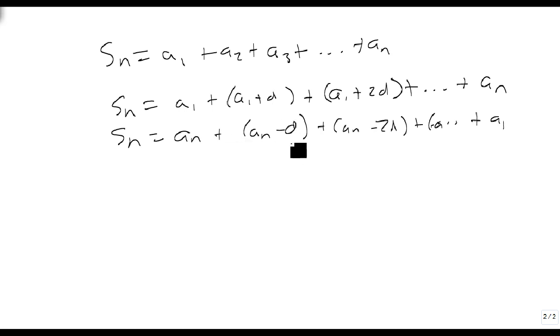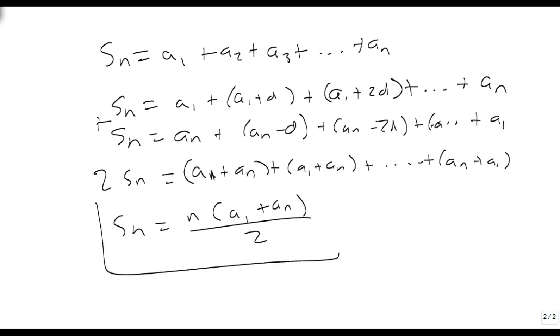If we add these together, notice the d's are going to go away. When we add these we get 2sn equals a1 plus an, plus a1 plus an, all the way down to an plus a1. And there's n of these, because there's n terms. So sn equals n times a1 plus an, divided by 2. This is the formula you need to know.